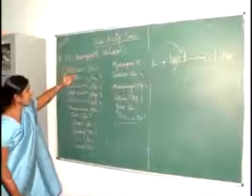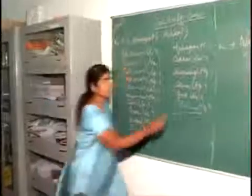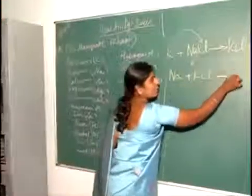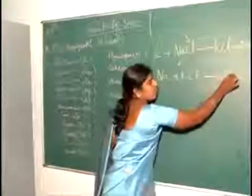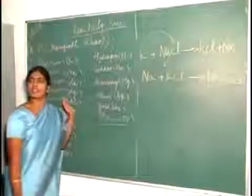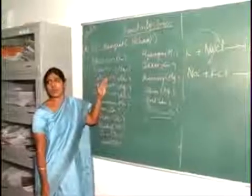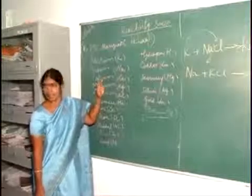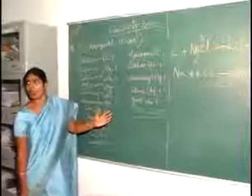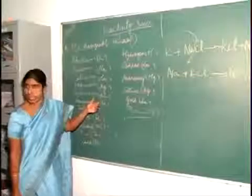For example, potassium can displace out sodium. But can sodium displace out? No. Can sodium displace out potassium from its chloride? No. So there is no reaction. So what is the use of studying this activity series? It helps us to purify the metals. It helps us to displace out pure metals — one use is to reduce the metal oxides or metals.